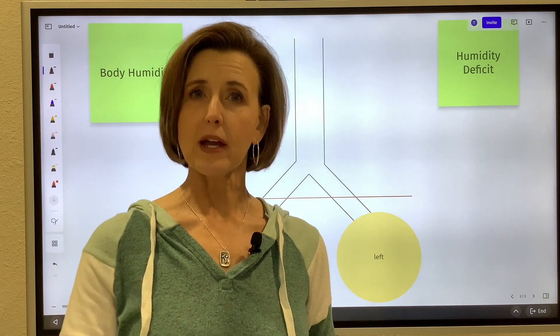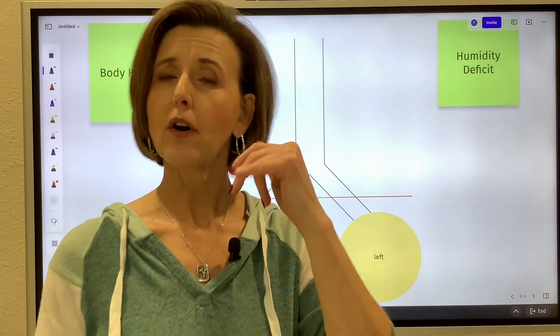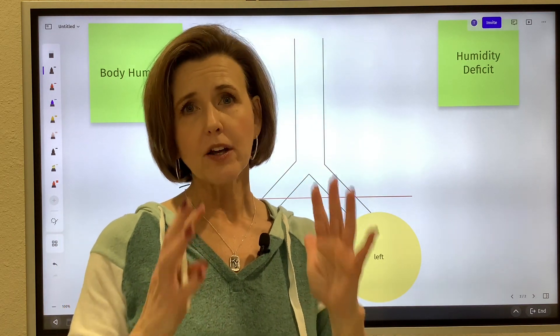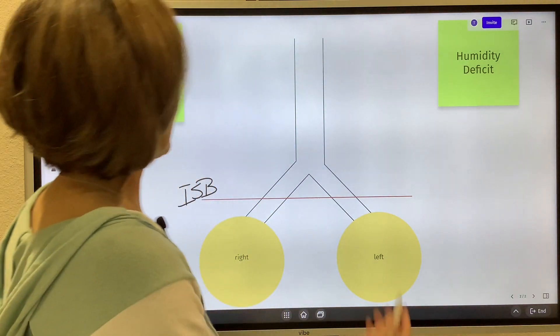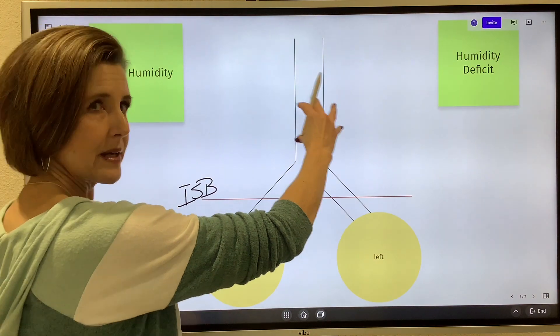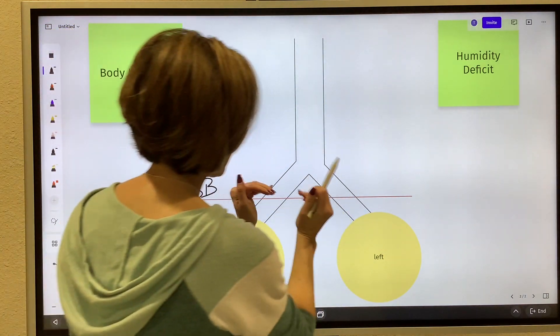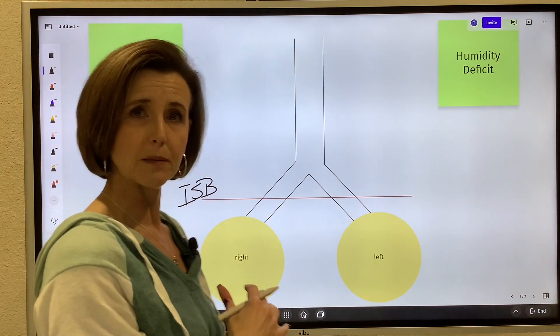It heats up to body temperature and it gains water vapor - it gets warmed and humidified. That's the function of our nose, our upper airway, and actually our trachea and main stem bronchi to some degree. So as a person breathes in, that air travels, it gets warm, it picks up humidity, and by the time it hits this isothermic saturation boundary it is completely warm to body temperature.